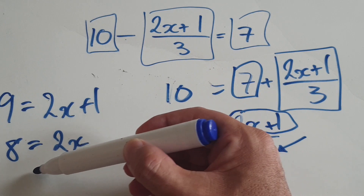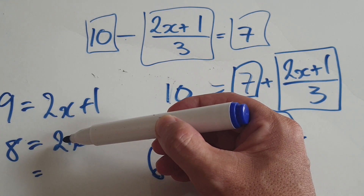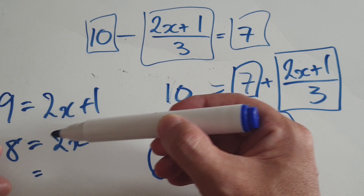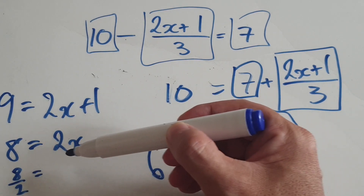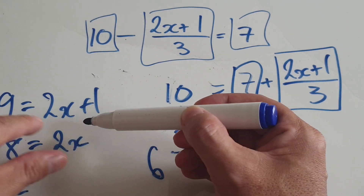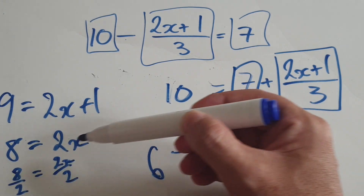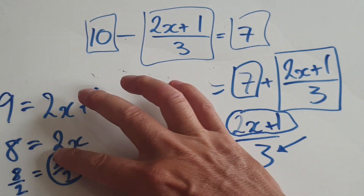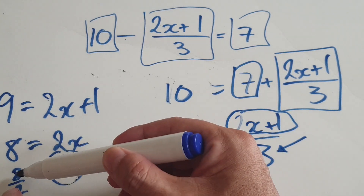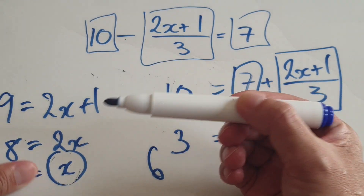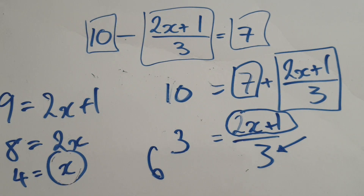Your eyes zoom into the x — you want to kill off this two. In your mind, divide both sides by two. Carry this 8 down and divide it by two; carry this thing down and divide it by two. This side is just x, and 8 divided by two is four. So your answer is four.